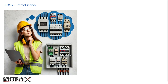Let's start with the basics. SCCR stands for short circuit current rating, and it represents the maximum current a component or equipment can safely withstand without causing damage or a safety hazard during a short circuit event. In simple terms, it tells you how much current the equipment can handle if something goes wrong. Exceeding this limit could result in fires, explosions, or projectile hazards — making it a critical specification in industrial electrical systems where large amounts of power are involved.